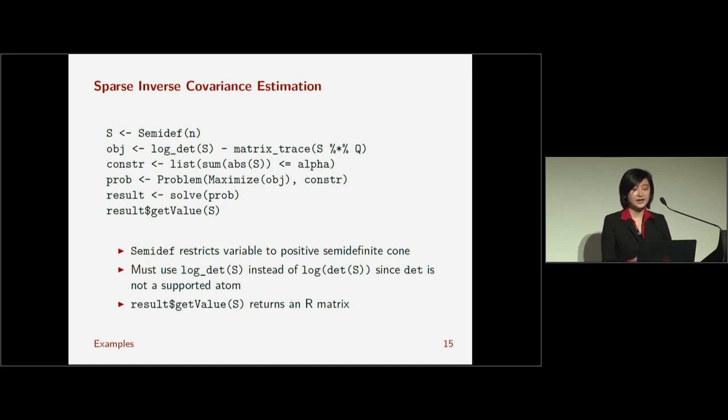Oh, so one thing you might ask is, why didn't I do log parentheses determinant of S? The reason is that the determinant is not a supported atom in CVXR. You can see the list of supported atoms on a CVXR website, which I'll give in our last slide. It's a very long list, but certain atoms, you sort of have to use the CVXR version because we don't have the determinant itself defined in the package.